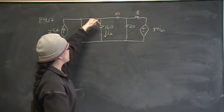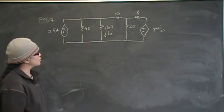I delta is the current that goes through the 160 ohm resistor.